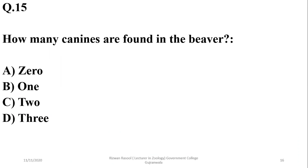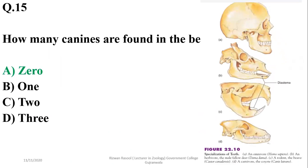Question 15: How many canines are found in the beaver? Beavers have no canines, so the right option is A. In omnivores like humans there is one canine, whereas in male deer and rodents such as the beaver, there is a gap instead, known as the diastema.